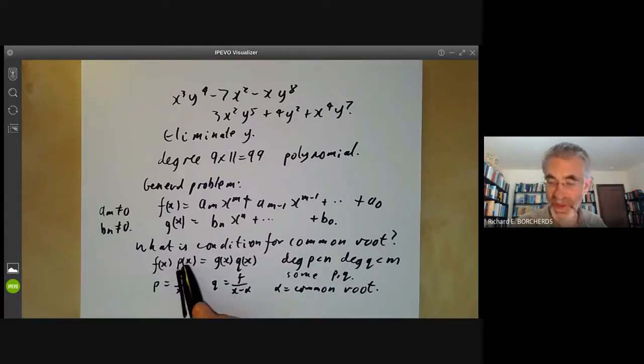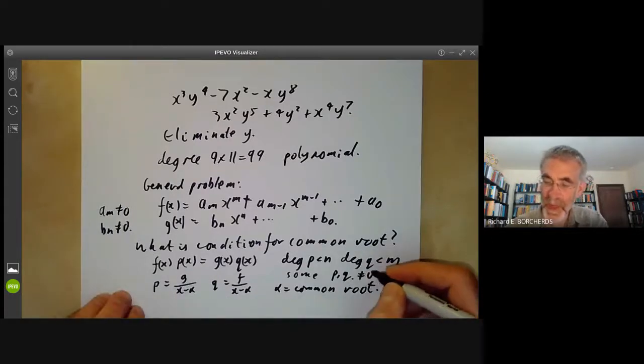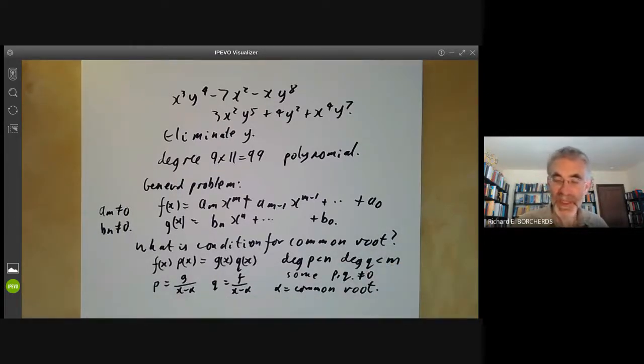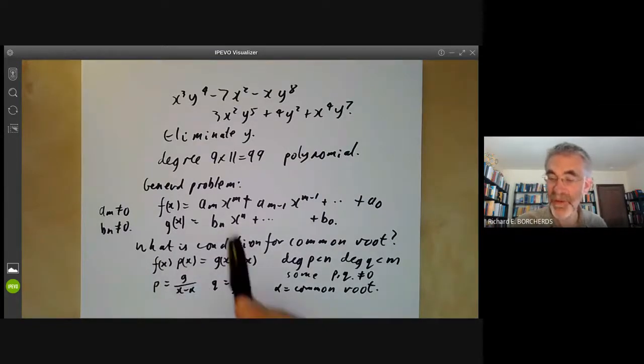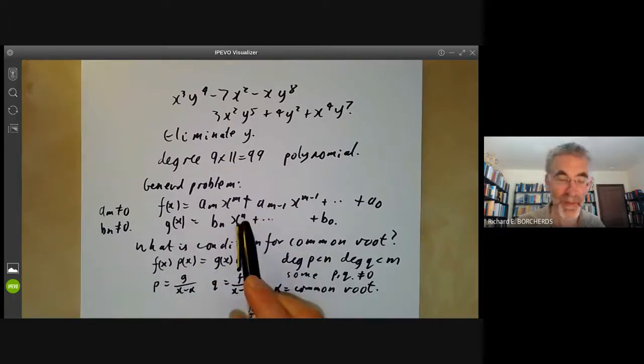p and q must, of course, be non-zero. Well, if you expand this out and look at the coefficients of each power of x, you'll get a whole lot of homogeneous linear equations in p and q, whose coefficients depend on the a's and the b's.